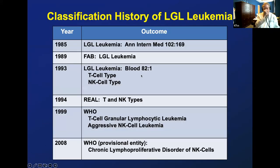Different stages of classification have evolved. In 1993, in Blood, we proposed distinguishing two types based on whether they're T or NK cell. That was eventually adopted by the World Health Organization in 1999 as T-cell granular lymphocytic leukemia, distinguishing it from aggressive NK cell leukemia — endemic in the Far East and Central America. In 2008, the provisional entity chronic lymphoproliferative disorder of NK cells was described, and the current WHO update will reclassify it as chronic NK-type LGL leukemia.